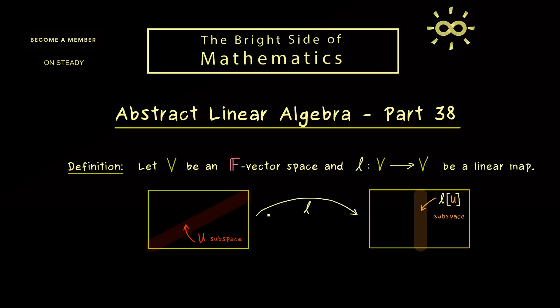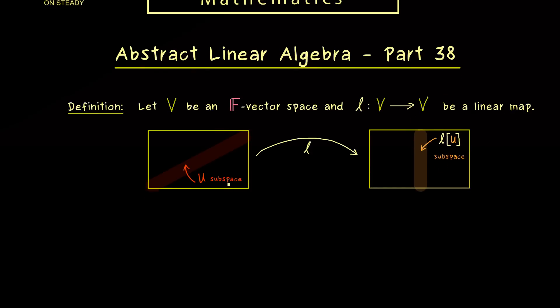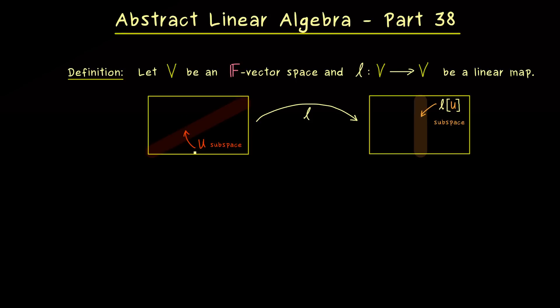In other words, the image of U under L is a subspace in V as well. So this is not so special and not hard to show, but we could have a well-chosen subspace U in the sense that it does not change much when we apply our linear map L. And indeed, these are the subspaces we call invariant.